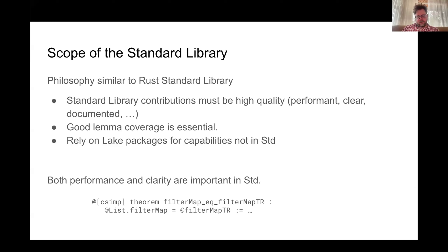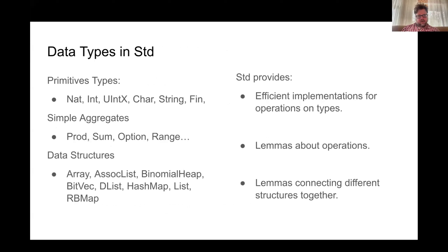We're relying on the CSIMP capability so we can substitute one definition for another. In terms of data types, we have primitive types, aggregates and data structures — the core sort of data types. We provide efficient implementations of operations on those types, lemmas about those operations, as well as lemmas connecting structures together — like converting from a hash map to a regular map, arrays to lists, and so on. We want to provide an integrated library that lets you work with a variety of theories.